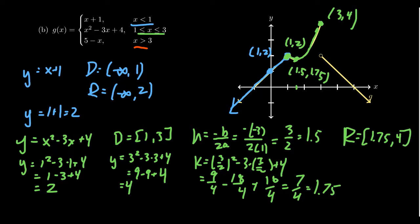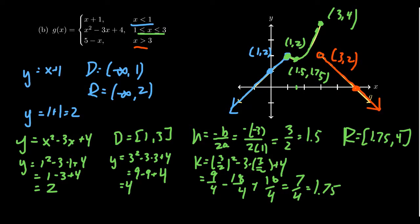For the last piece — a line with x-intercept 5 — checking what happens at x equals 3: y equals 5 minus 3, which is 2, giving the point (3, 2). Notice this point is not included in the graph — it's an open dot. We connect the dots to make the line. The domain is 3 to infinity. The range is given going from 2 towards negative infinity, so negative infinity to 2 since it's decreasing.